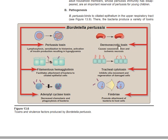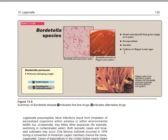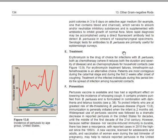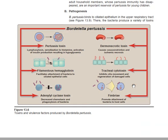The next toxin produced by Bordetella pertussis is the dermonecrotic toxin, which causes vasoconstriction and ischemic necrosis. The next virulence factor is filamentous hemagglutinin, which facilitates the attachment of the bacteria to the ciliated epithelial cells. The next is tracheal cytotoxin, which inhibits the ciliary movement of the trachea and prevents the regeneration of damaged cells.